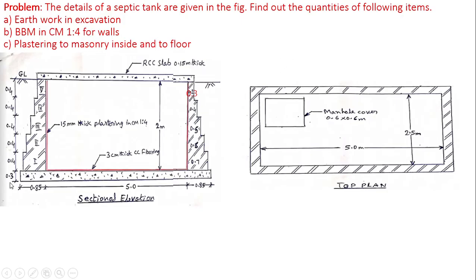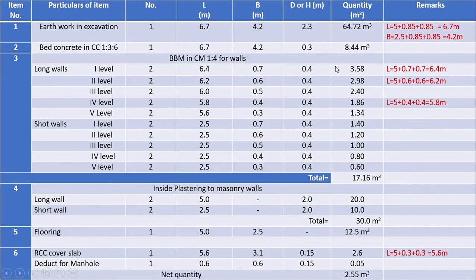Item 3: burnt brick masonry wall in CM 1:4. Let us divide the walls of this rectangular tank as set of two long walls and two short walls. Note that the width of walls at different levels are different.